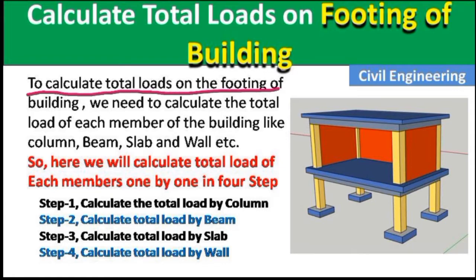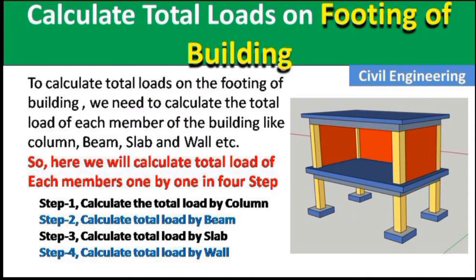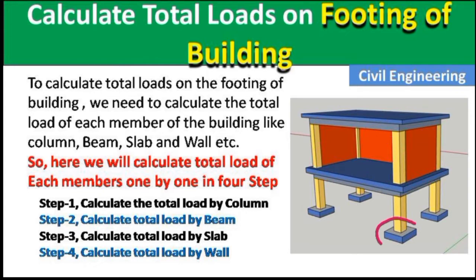To calculate the total loads on the footing, we need to calculate the total load of each member of the building — like column, beam, slab, and wall. Here in this 3D model picture, the total weight on this footing will be applied by the slab, four columns, brick wall, and beams shown in gray color. Adding all the loads of these components gives us the total load applied on the footing.